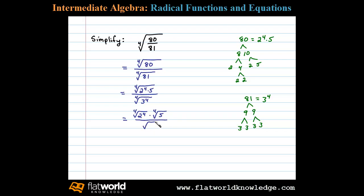Then simplifying, the fourth root of 2 to the 4th results in 2, so we have 2 times the fourth root of 5 divided by 3, since the fourth root of 3 to the 4th results in 3.